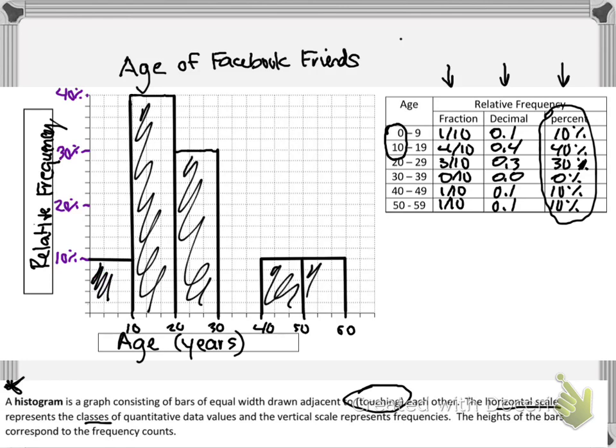So that's it. That's our relative frequency histogram. The other thing I wanted to talk about, I forgot to talk about in the other video, is why it's so important that all these bars are adjacent or touch each other.